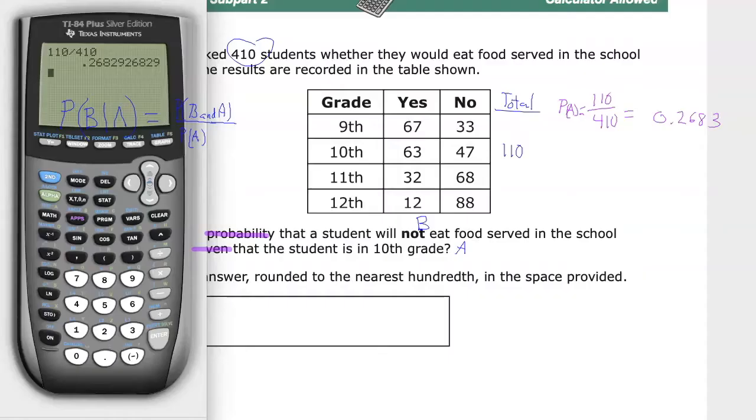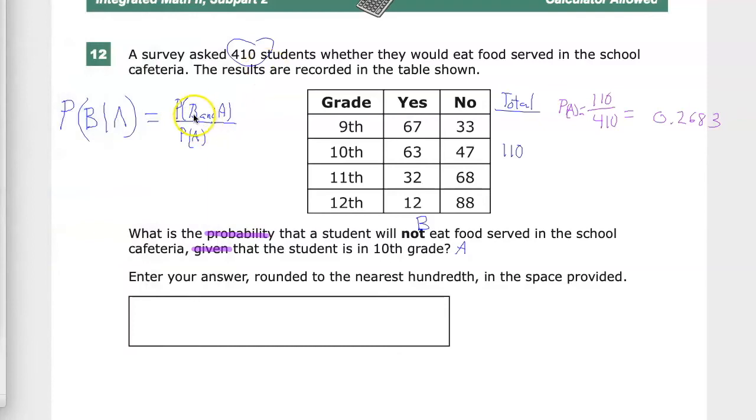Now we've gotten that part, that's all hunky dory. Let's talk about the next part. Now I need to find what the probability of B and A is, which is to say they're 10th graders and they don't eat food in the lunch cafeteria, or they refuse to, whatever. I'm not here to judge them. So 10th grade, no, right there. That's kind of how that works.